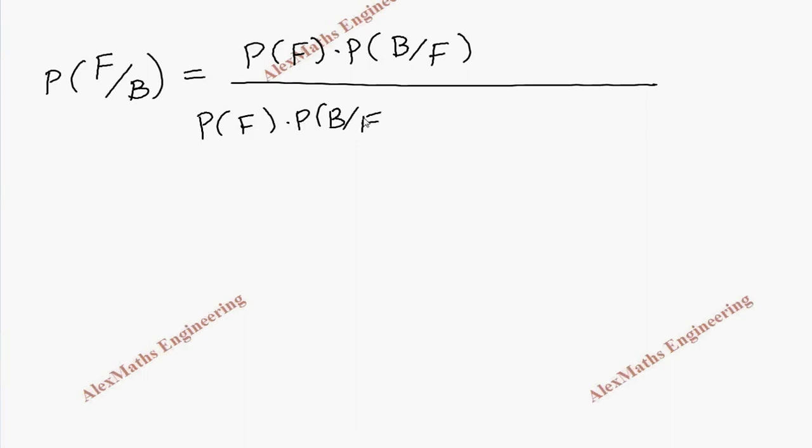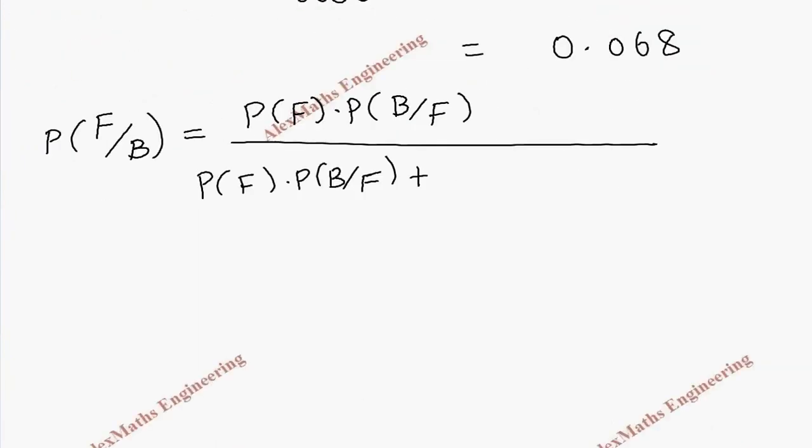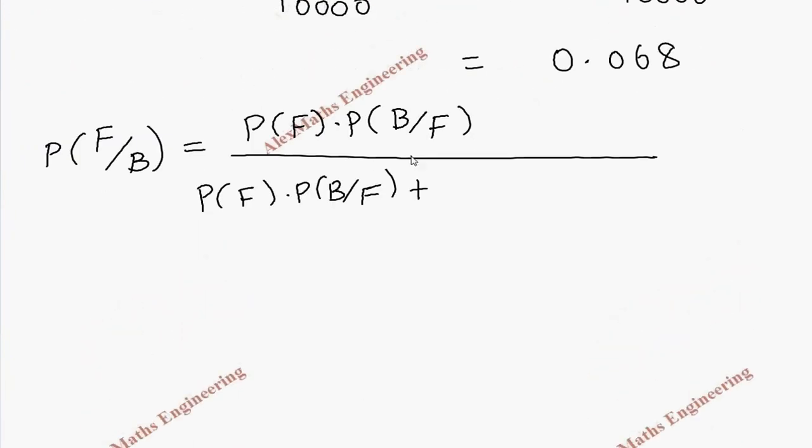So how we have written the term for F, we have to write for the other two, that is D and E. So let's write for D which is P(D) into P(B|D) plus P(E) into P(B|E).